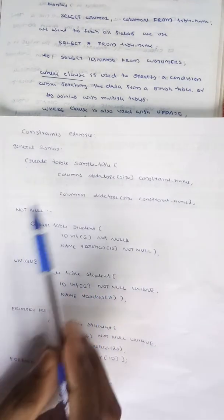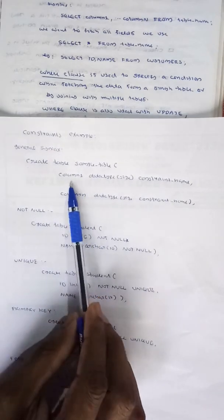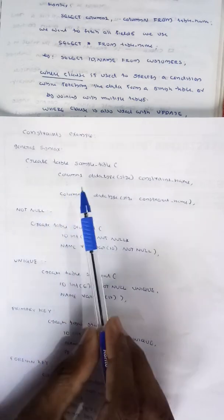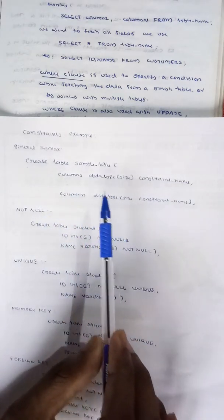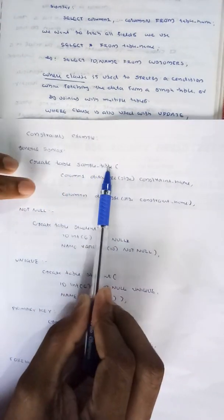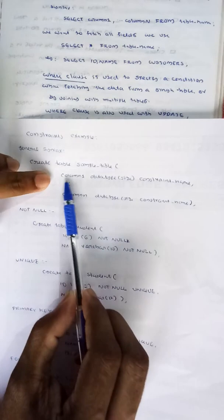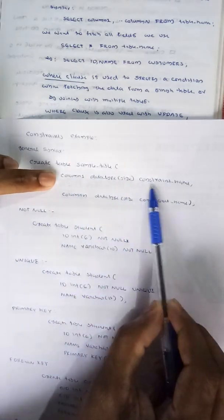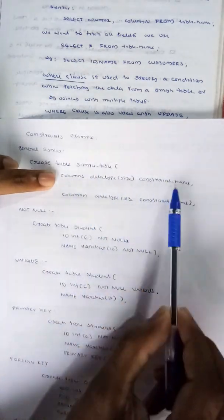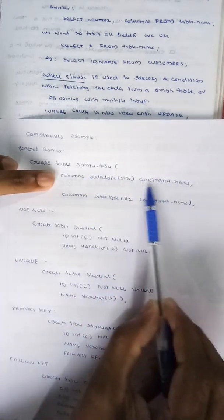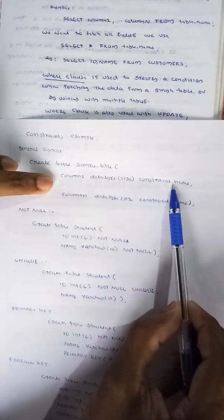This is the general syntax for constraints. To create a table with constraints: CREATE TABLE sample_table, column1 datatype constraint, column2 datatype constraint. This is how you apply constraints when defining a table.